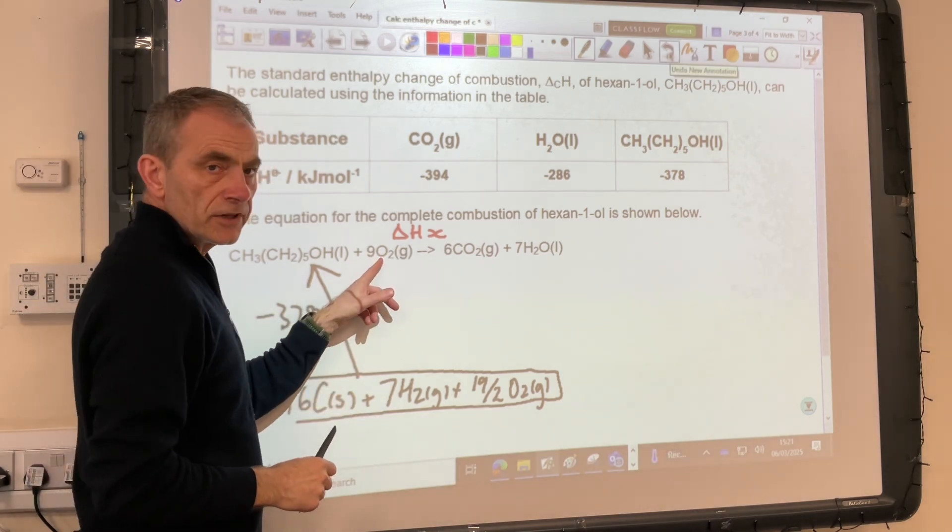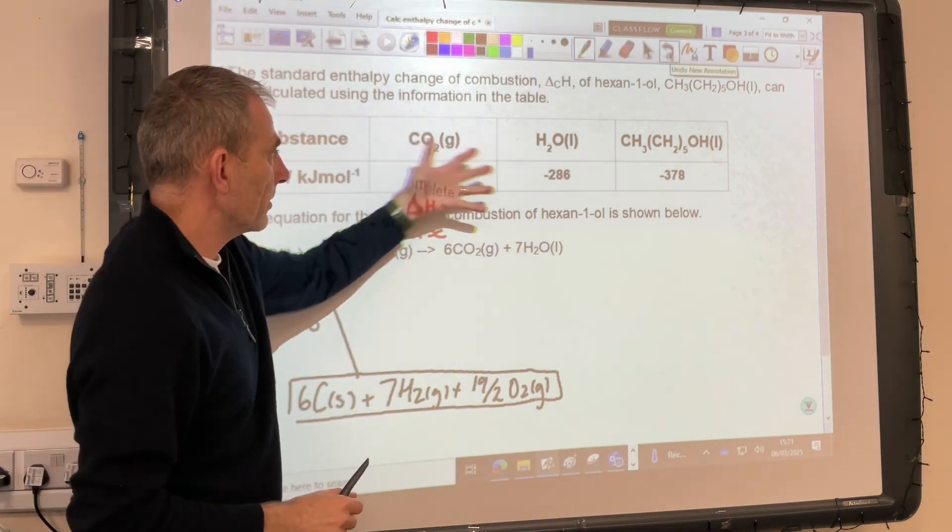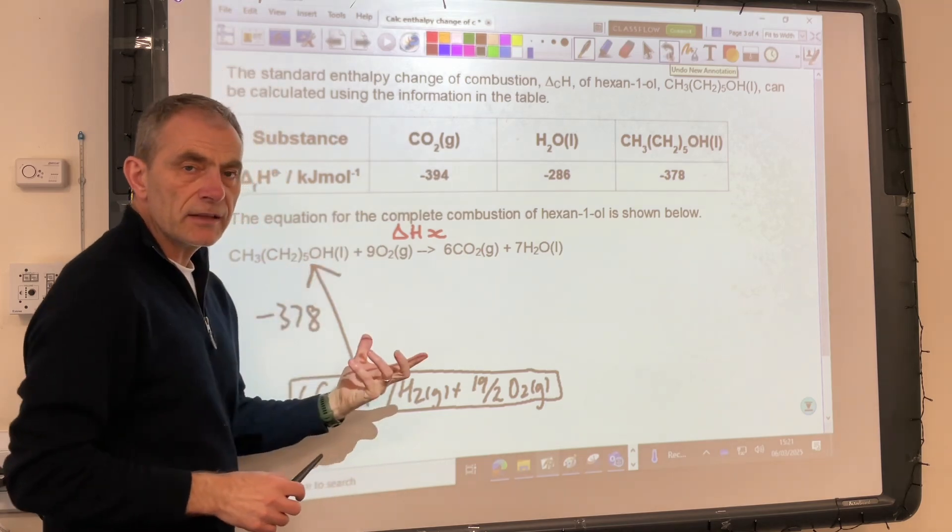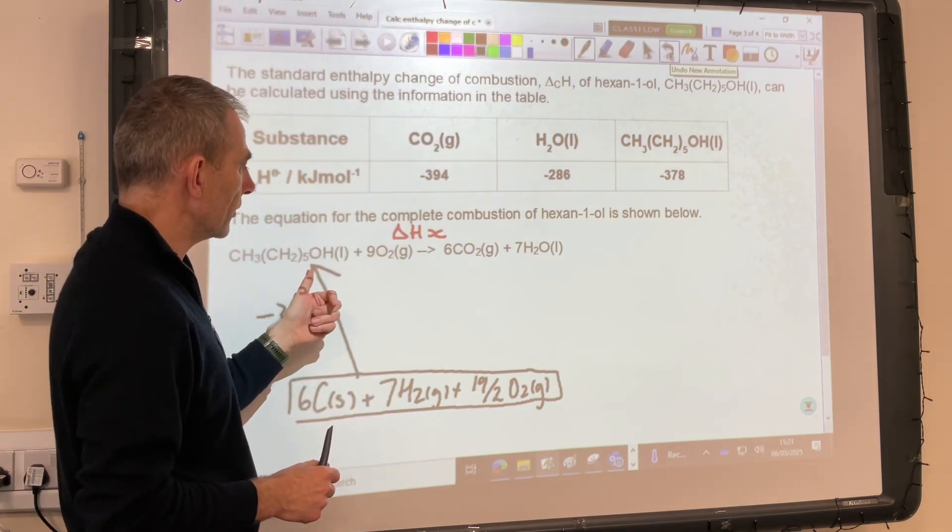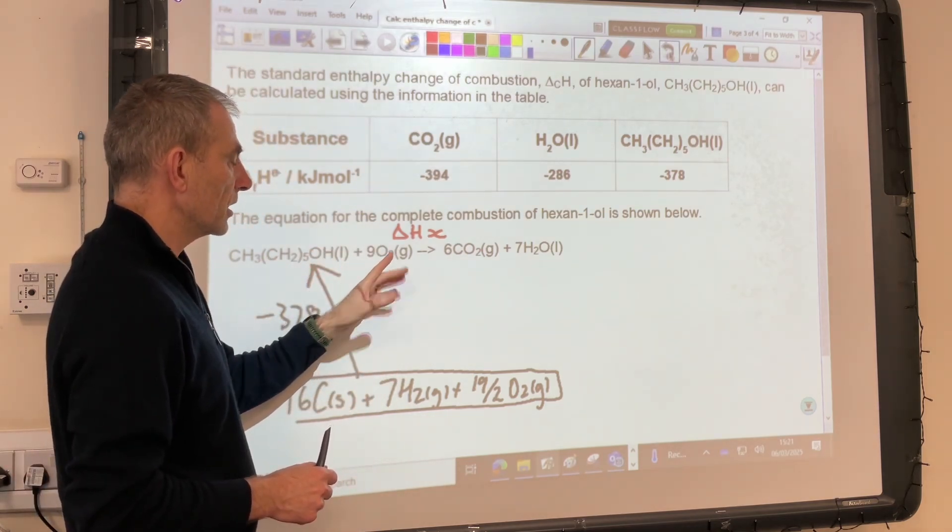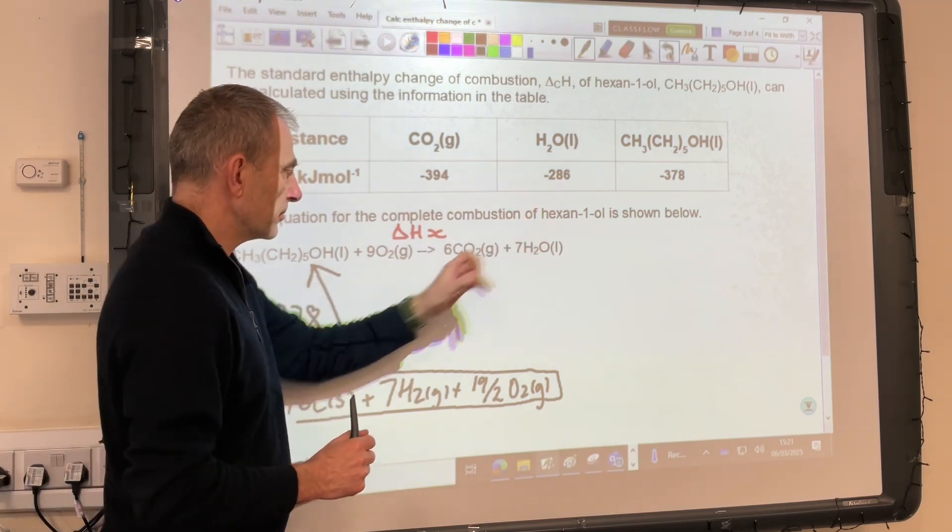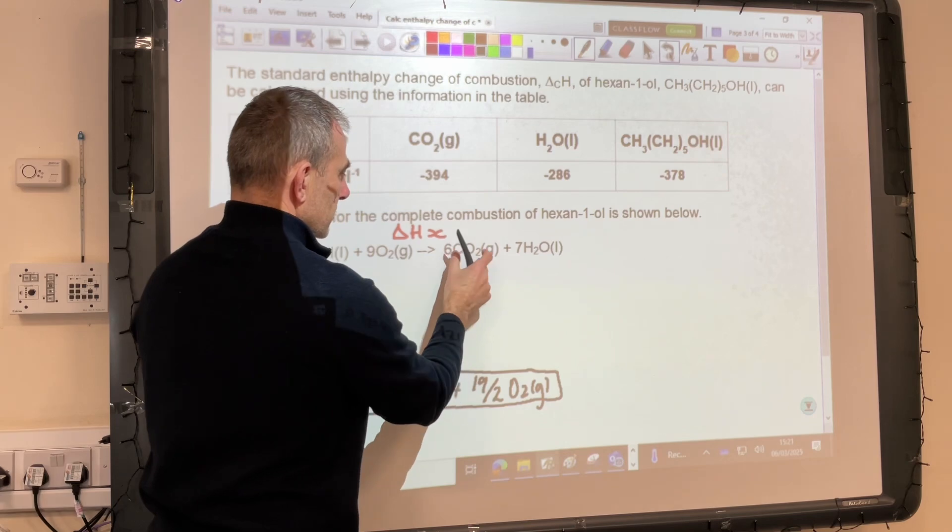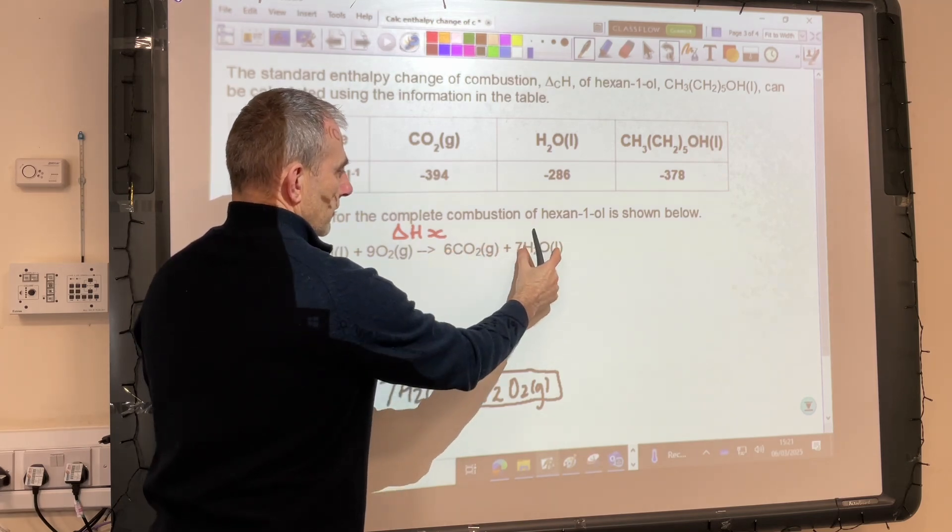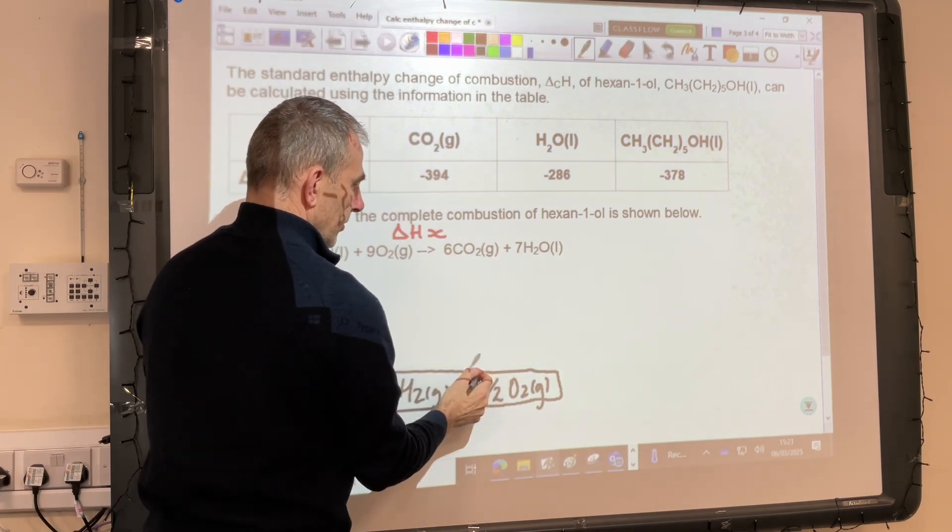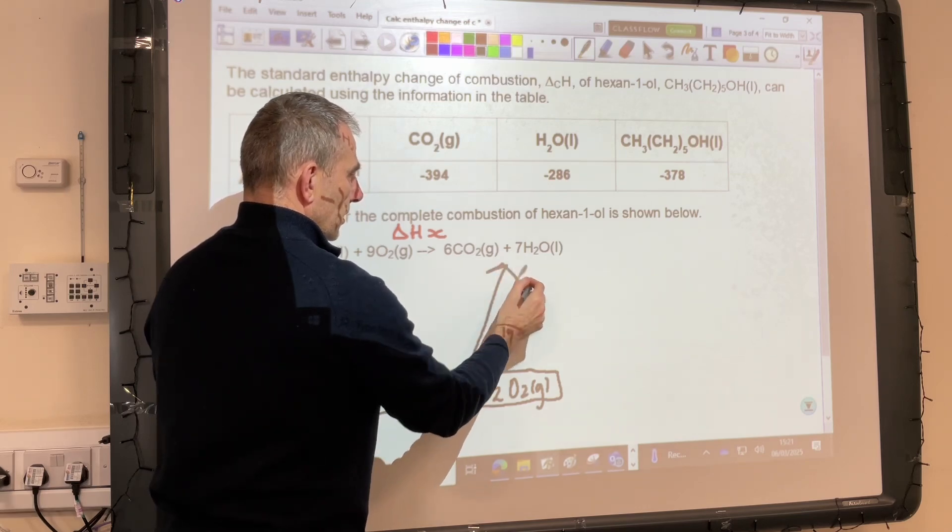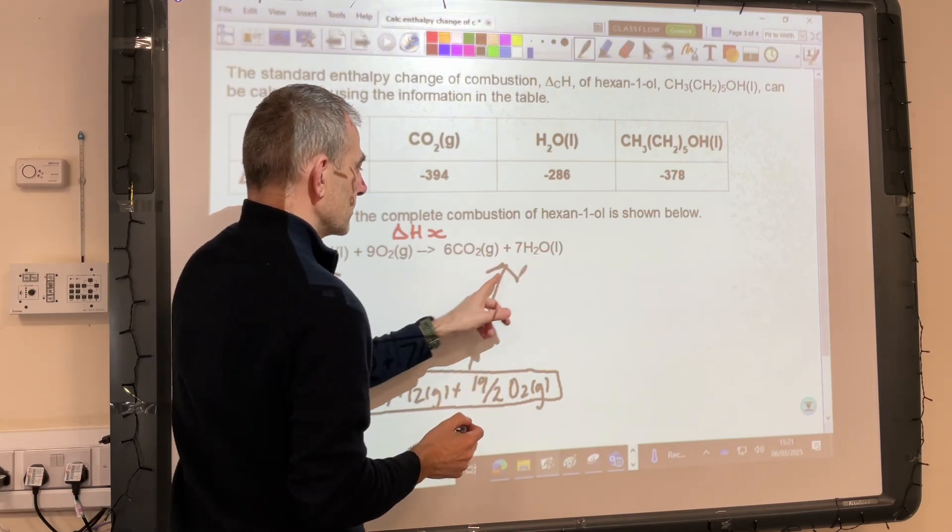So you'll notice we've got oxygen in the equation. We've got nothing about oxygen here. We don't need anything because the enthalpy change of formation of any element is zero. So it's not going to feature in the calculation. Moving on to the products, we've got 6 moles of CO2 being formed, 7 moles of H2O. So I'm just going to put one arrow there and then I'm going to put both of the values here.